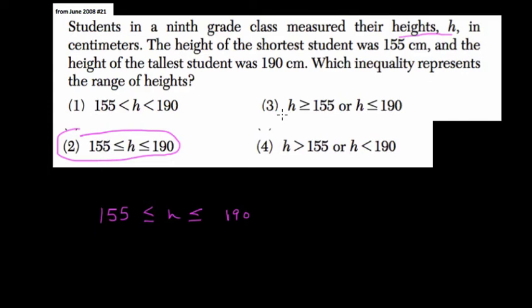Choice 3 doesn't make sense because h is greater than or equal to 155 OR h is less than or equal to 190. It's got to be both greater than or equal to 155 AND less than 190. If you take each of these individually, if h is greater than or equal to 155, couldn't that mean h is anything greater than 155, like 1,000? There's no stop to it.